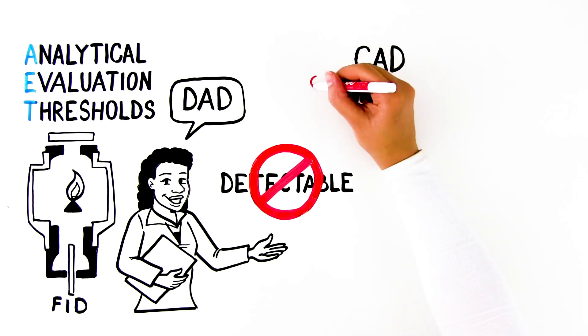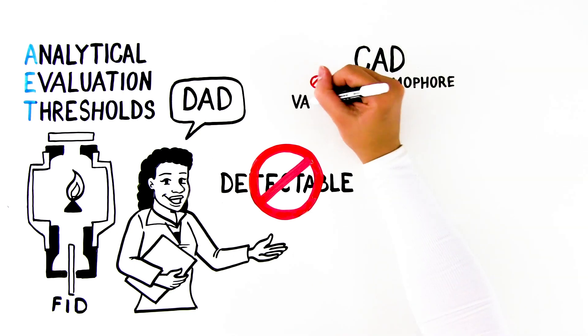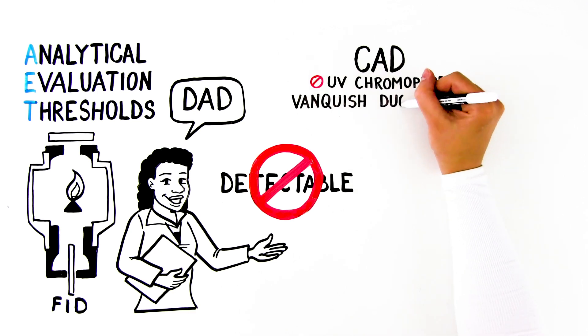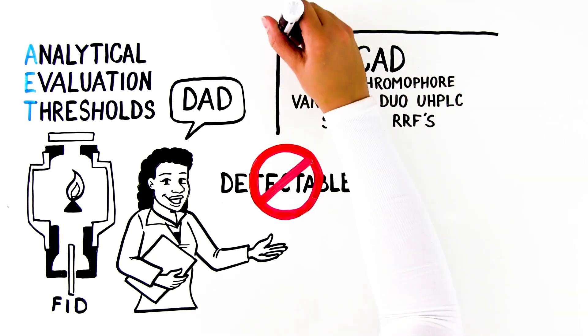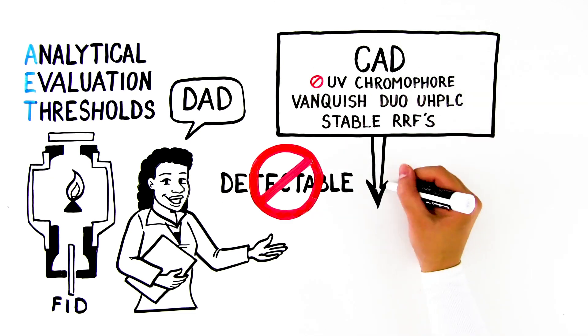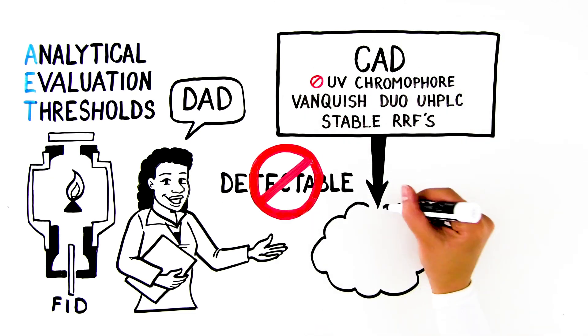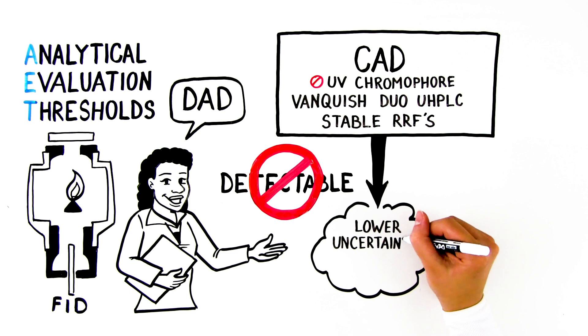CAD is an alternative universal detector for quantitation of compounds with no UV chromophore. When used with the Vanquish Duo UHPLC system for inverse gradient, a mass proportional response is achieved using CAD, resulting in much lower uncertainty factors.